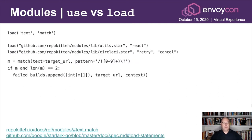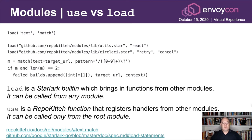There is another way to load modules, which is using the Starlark load statement. Load, instead of registering handlers on modules, brings a function defined in another module — whether an internal RepoKitten module like Test, or a third-party module like Utilist and CircleCI — and brings a function into the context being evaluated. So what is the difference between load and use? Load is a Starlark built-in which brings in a function from other modules and can be called from any module. Use is a RepoKitten function that registers handlers from other modules and can only be called from the root module. Note that use does not bring any new variables into the local context; it just tells RepoKitten to load that module and register its handlers.